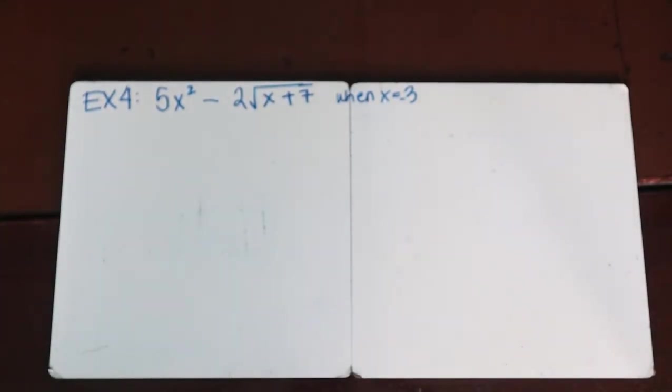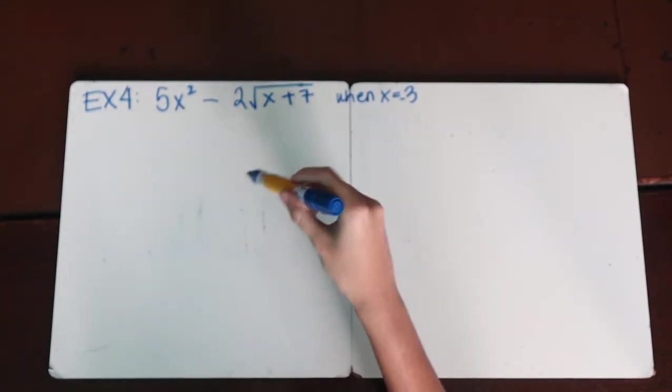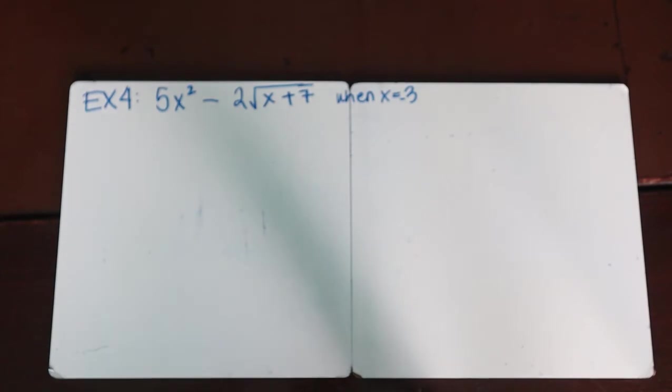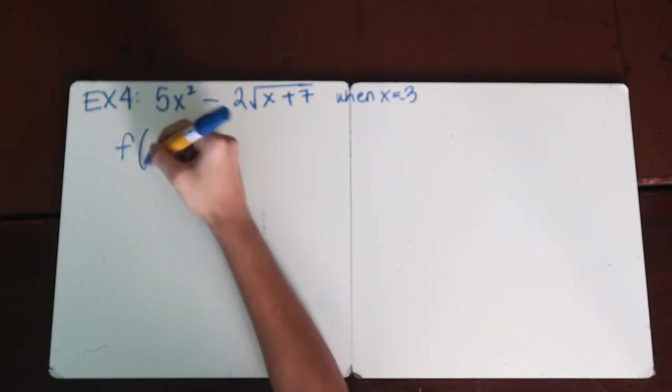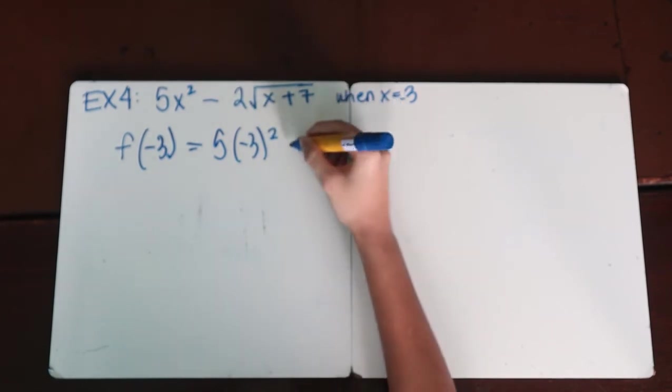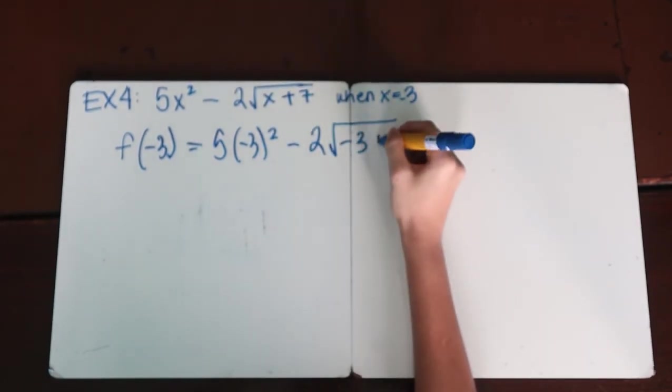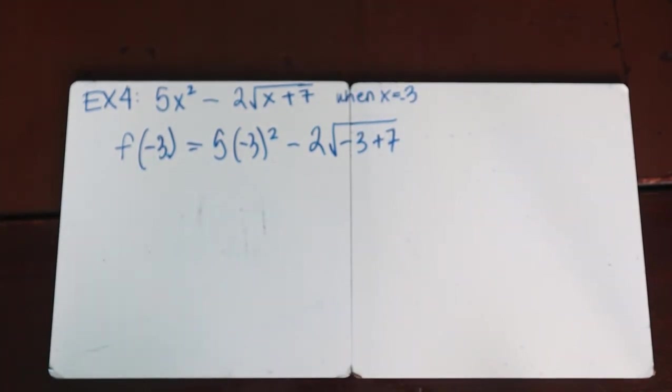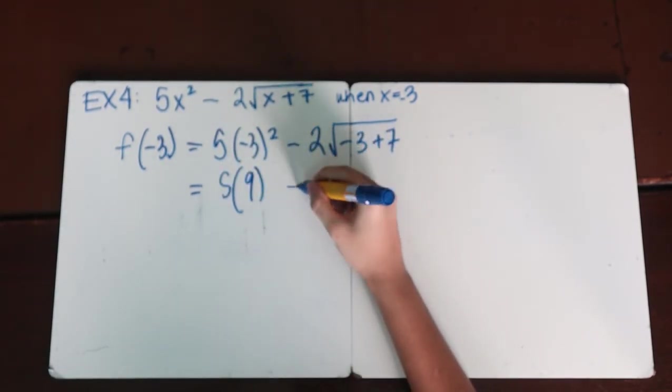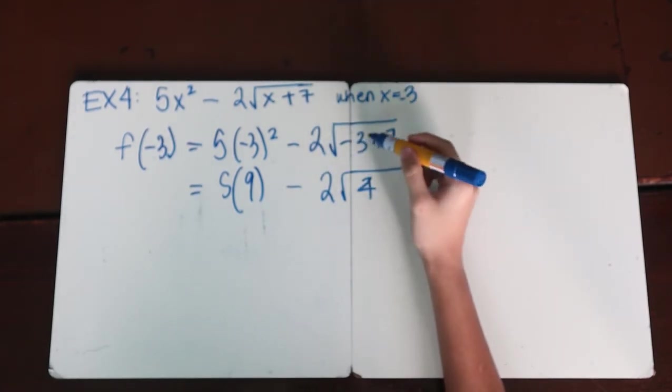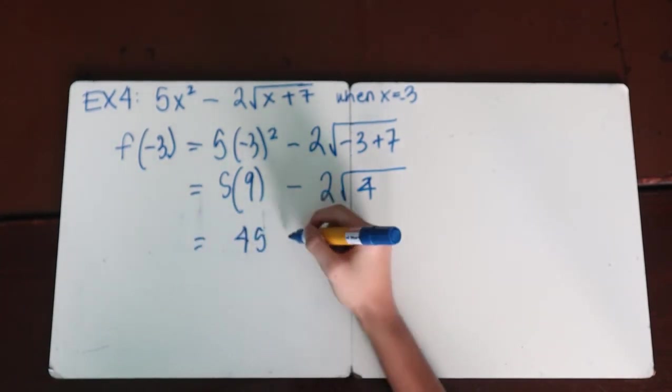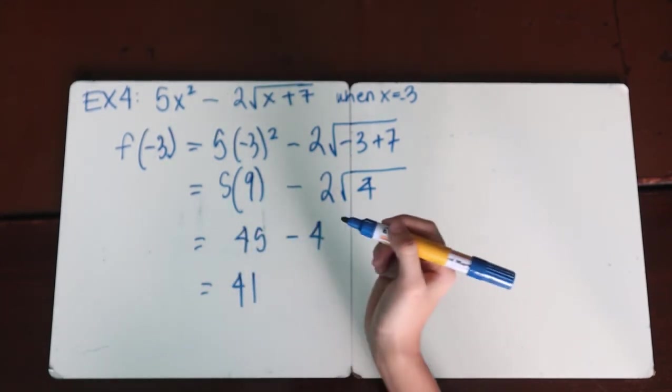Okay, let's try another example. Given the function f(x) = fx² - 2√x + 7, when x equals negative 3, f(-3) equals 5(-3)² - 2(-3) + 7. Then now we just simplify. Equals 9, minus 5 times 9, minus 2(4). Why is it 4? If it's negative 3 plus 7 equals positive 4. So that would equal 5 times 9 is 45, minus 4, equals 41. That's our final answer.